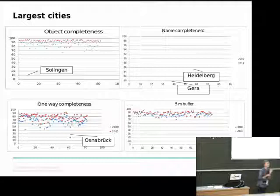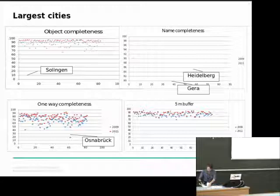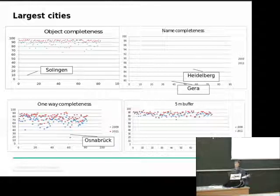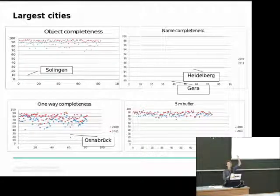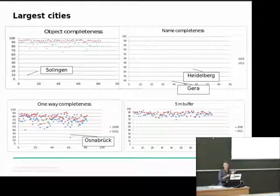Name completeness is still quite a mixed picture — it is improving, but it is very different depending on the city. Then we have one-way completeness, and you see that this is improving for the cities, with red points mostly above 80 percent. Precision, now at the level of cities compared to the road categories before, is very good at around 90 percent — so around 90 percent of objects in the cities are within the five meters buffer.